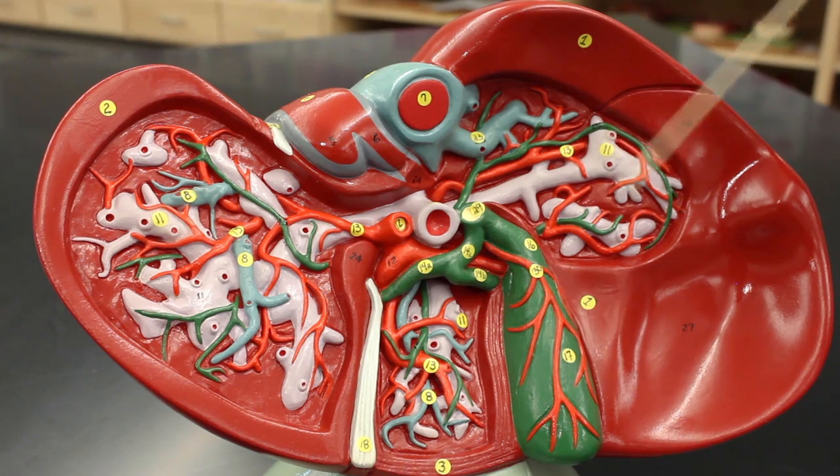If you look here, number 12 is representing the hepatic artery proper, and 13 in all of these other red lines are the branches of the hepatic artery proper.